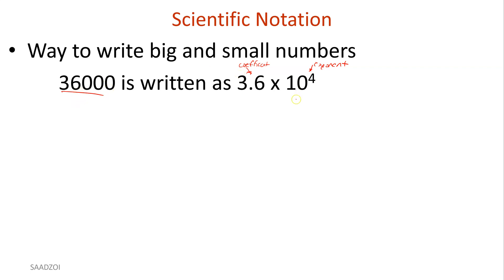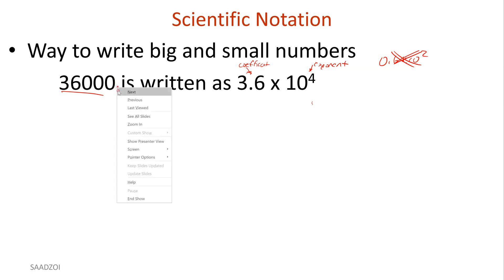This value is called the coefficient, and this is called the exponent. You cannot go zero point anything — that's bad. Where's your decimal point? Remember, if you don't see it written, it's at the end. That's just always the case.